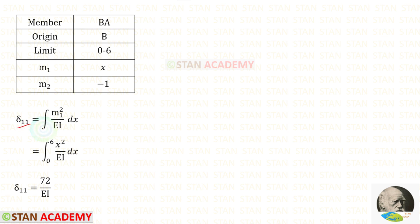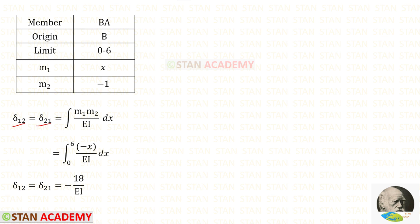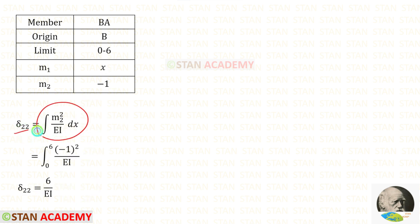Now let us find δ11. The formula is the integration of M1² / EI dx, with limits 0 to 6. M1 is x, so after integration we get δ11. For δ12 and δ21, using integration of M1·M2 / EI dx, with M1·M2 = x × (−1) = −x, we get δ12 = δ21 = −18/EI. For δ22, using integration of M2² / EI dx, we get δ22 = 6/EI.